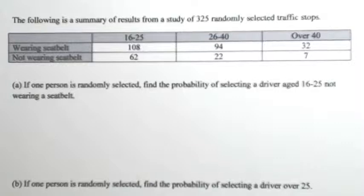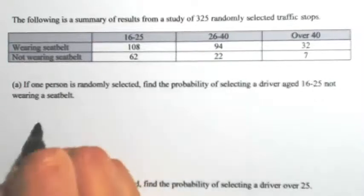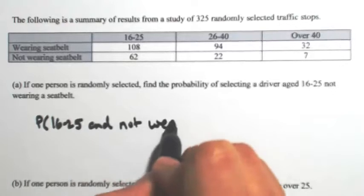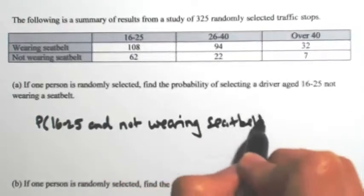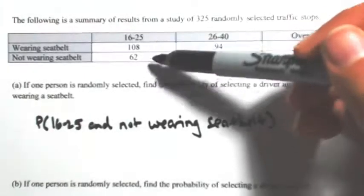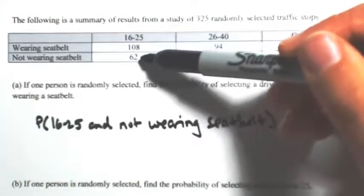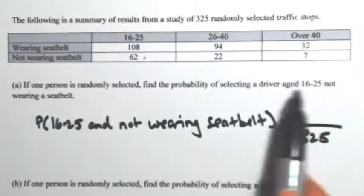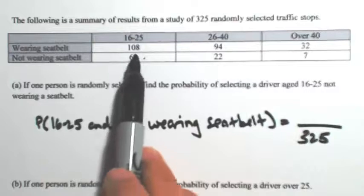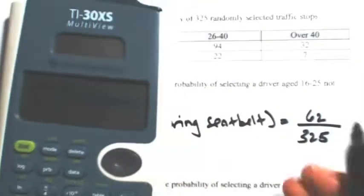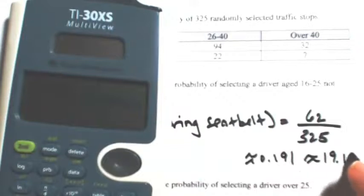In this first example, let's say one person is randomly selected. Find the probability of selecting a driver that's aged 16 to 25 who is not wearing a seatbelt. So I'm looking for the probability of getting someone 16 to 25 and not wearing a seatbelt. I'll go to the people 16 to 25 — that's the first column. Of these people, the ones that were not wearing a seatbelt: 62 of them. So out of the total number of traffic stops, which is 325, there's only one group here that satisfies both requirements, which is 62. So 62 out of 325 gives us about 0.191, or about a 19.1% probability.